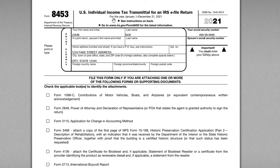The 8453 is a U.S. individual income tax transmittal for an e-filed return. That's an important point — if you're just paper filing the whole return, you don't need this, because you're paper filing everything and the IRS will get it all at once. This form is filed when you're e-filing a return and then need to submit another piece in paper format.